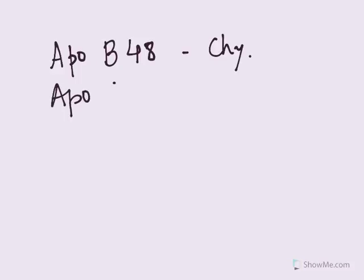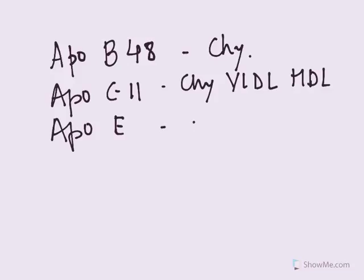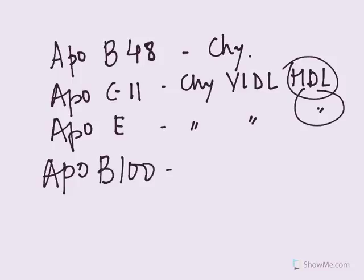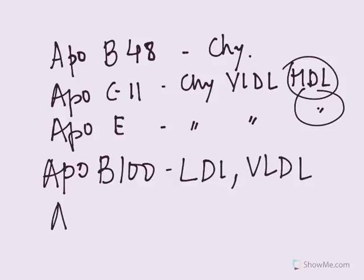So I think I've explained everything, but in summary, we can see what all apoproteins are there. So there is ApoB48, which is seen in the chylomicrons only, then there is ApoC2 and ApoE, which you will find in chylomicron, VLDL, and the original person who has it is HDL. And basically, this is the guy who donated it to these two, chylomicron and VLDL. Then we have ApoB100, which you will see in LDL, VLDL, and then we have ApoA1, which you will see only in HDL.